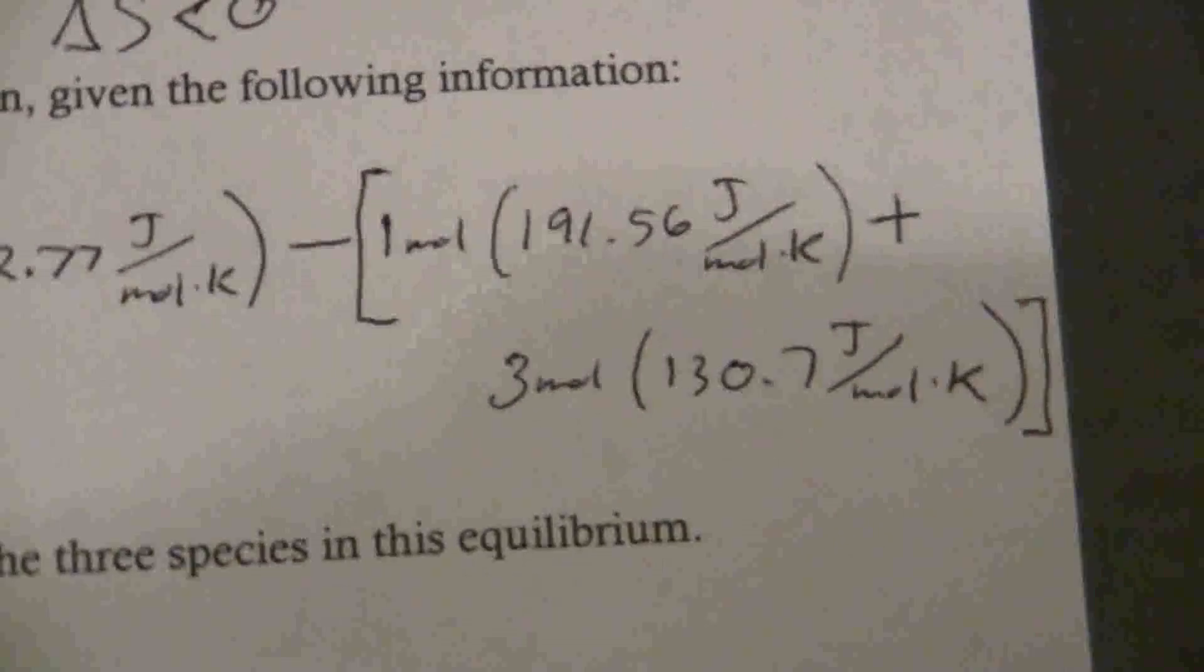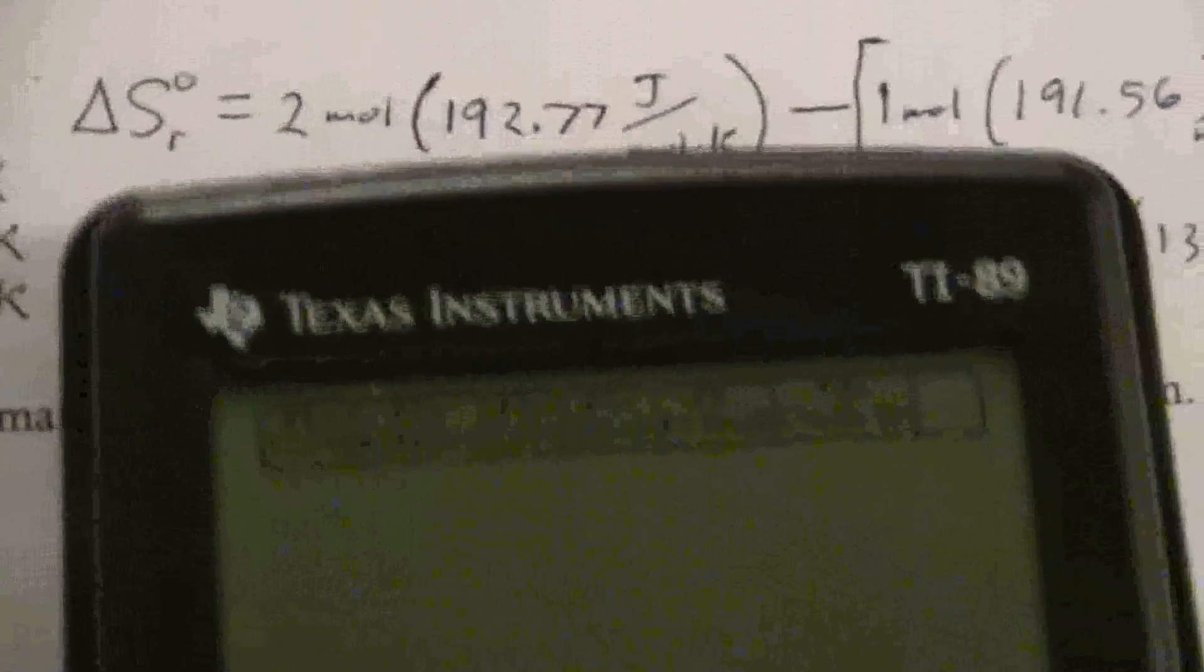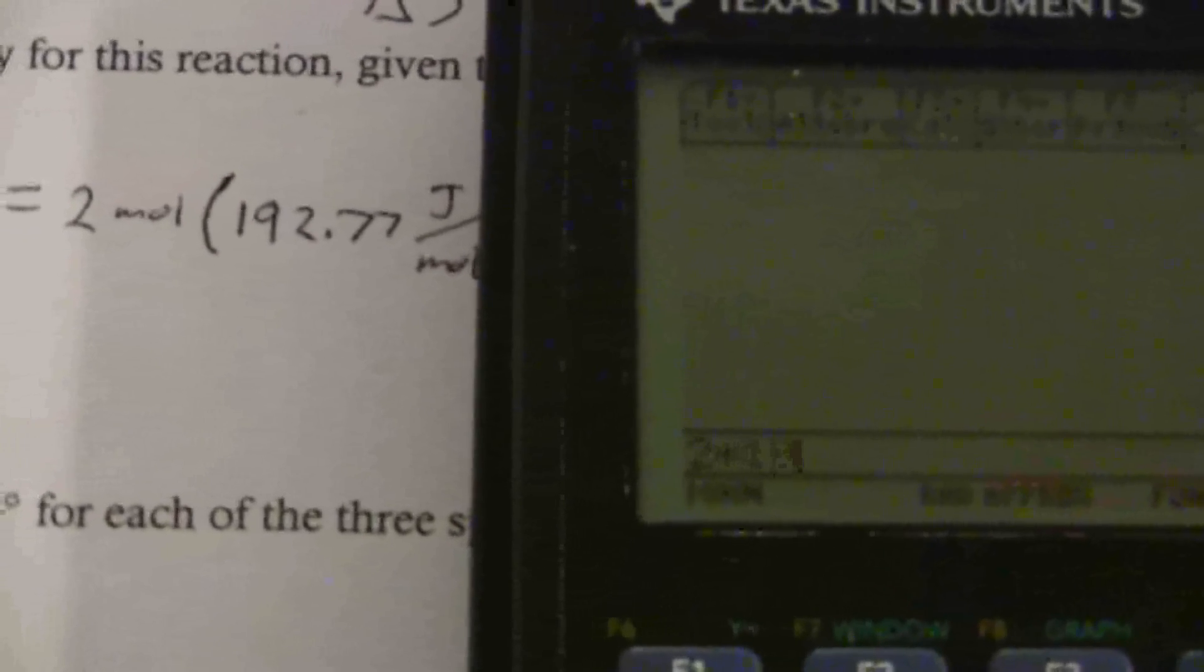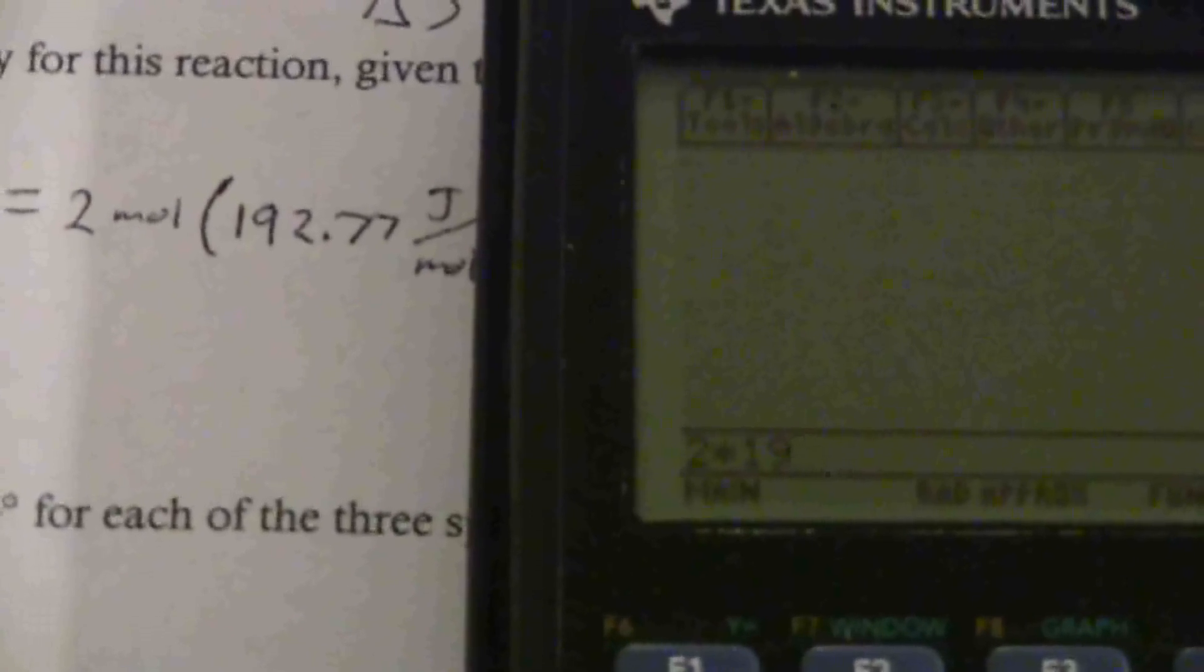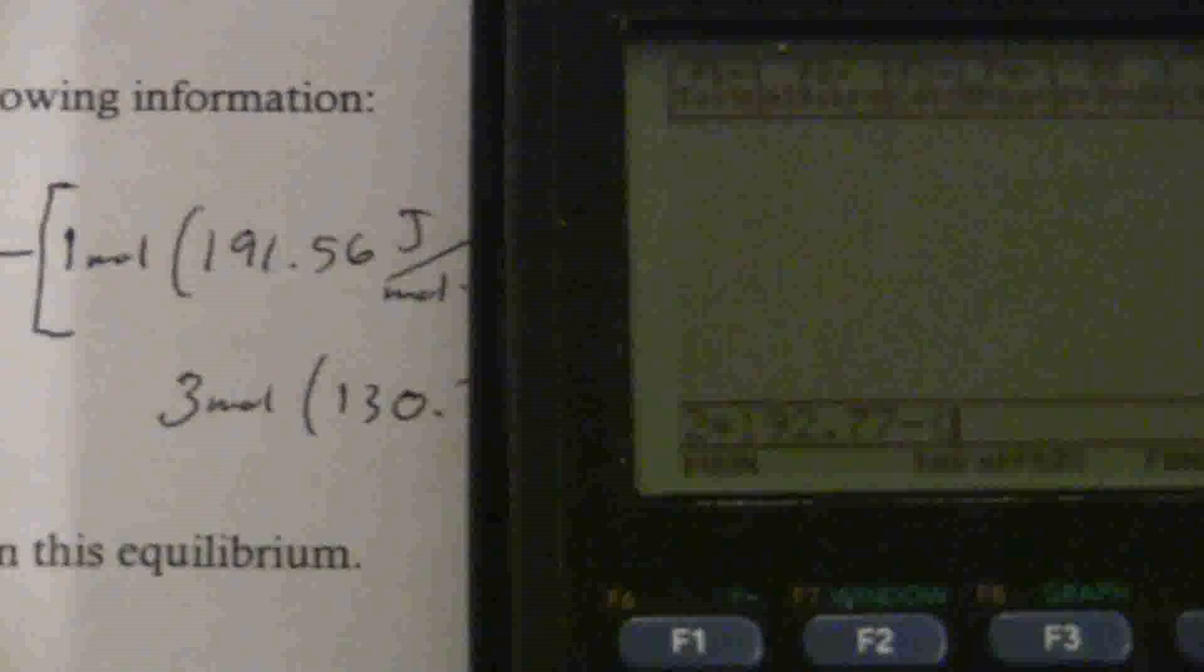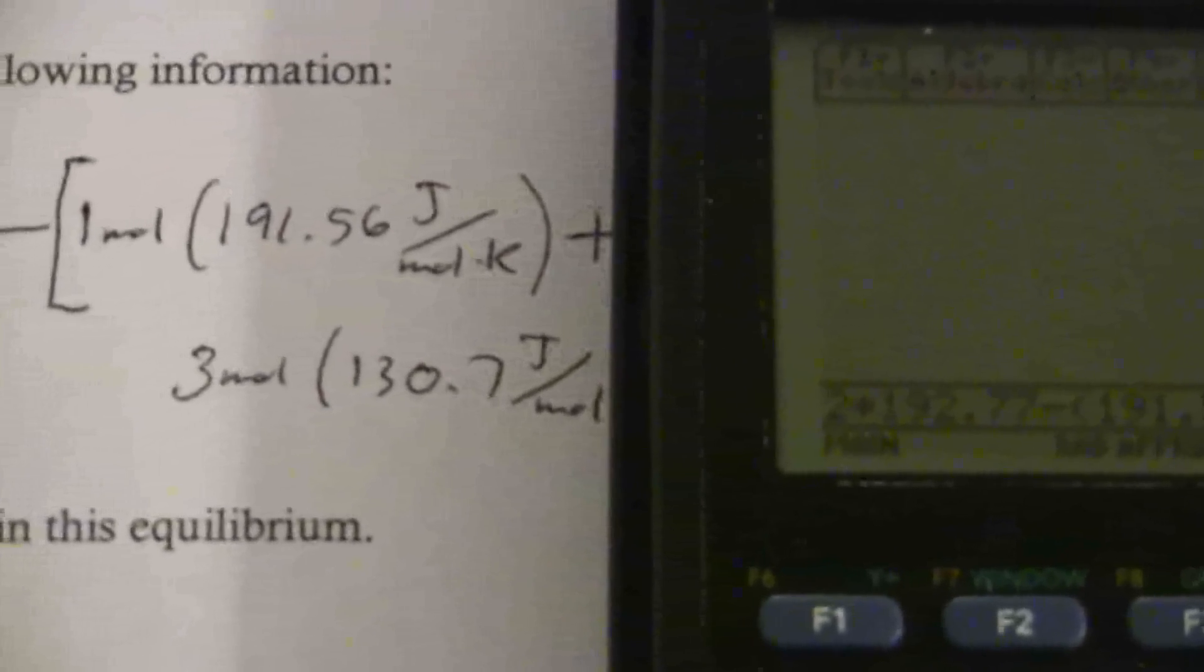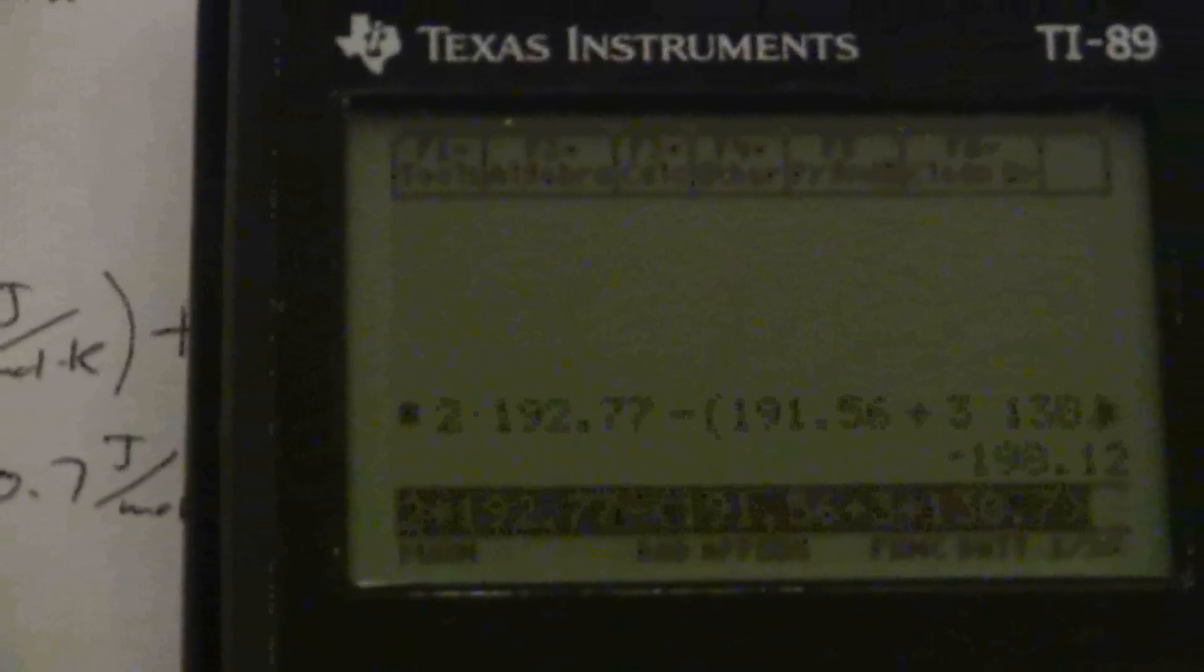So now, if I calculate this out, what I end up with is two times 192.77 minus 191.56 plus three times 130.7. So what I end up with is negative 198.12.